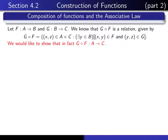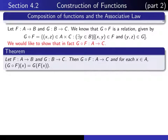The question is: is it the case that F composed with G is actually a function from A to C? In this lecture we're going to talk about the following theorem, which tells us that the composition is always a function. When you compose two functions, you always get a function. It says that F composed with G is a function from A to C, and furthermore, the value F composed with G at X is equal to G of F of X.